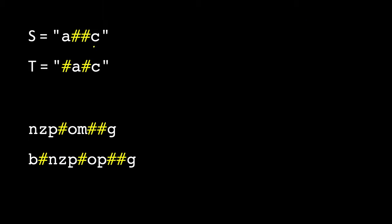Let's briefly recap the problem. You are given two strings S and T. The hash symbol means pressing the backspace key on a keyboard. If there is no character and you press backspace, nothing will be deleted. But if there is a character and you press backspace, that character will be deleted.